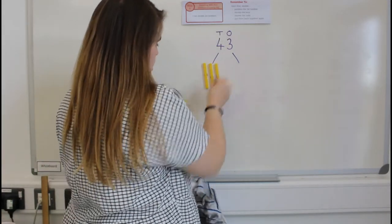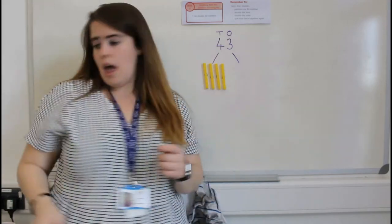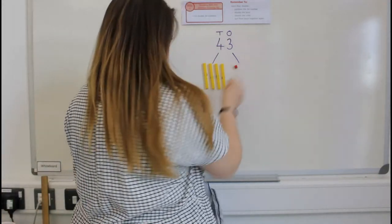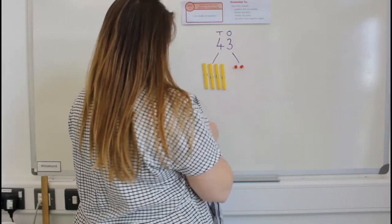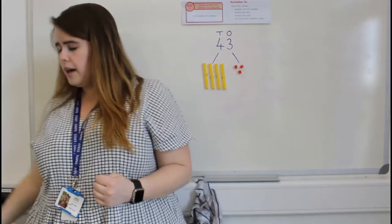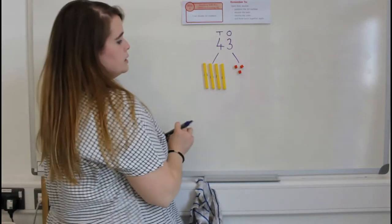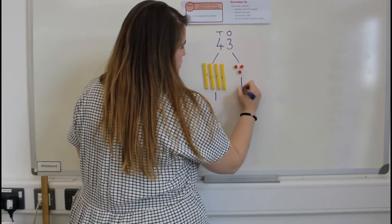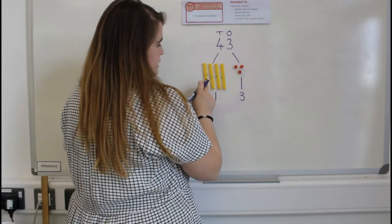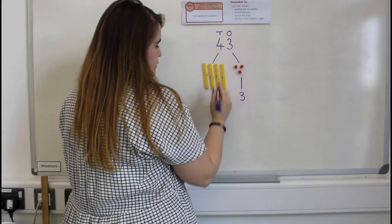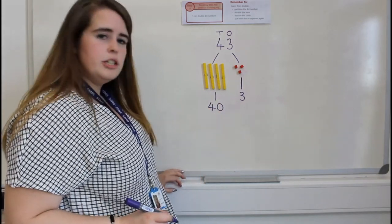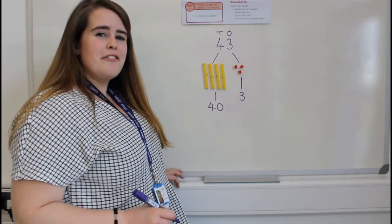Four tens and three ones. One, two, three, four — and three ones. One, two, three. Ten, twenty, thirty, forty. So our number has been partitioned into forty and three, which makes forty-three.